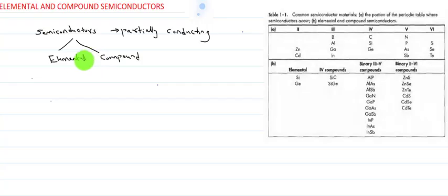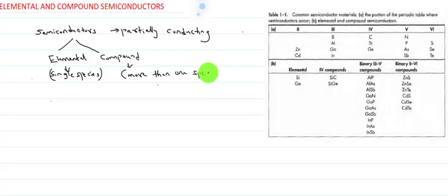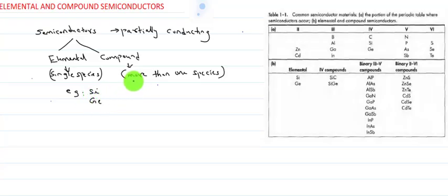Elemental semiconductors are composed of a single species of atoms. Such materials are known as elemental semiconductors. Compound semiconductors are composed of more than one species of atoms. Examples of elemental semiconductors are silicon and germanium. In a silicon crystal, there will be a uniform arrangement of silicon atoms.